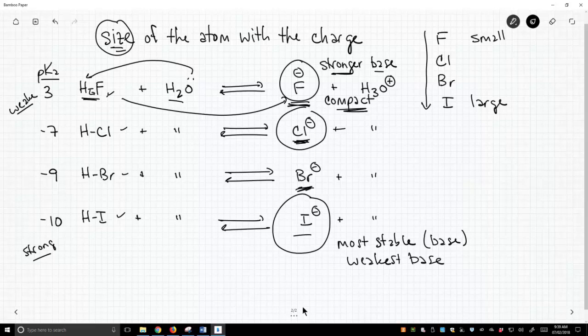Weakest conjugate base means HI is the strongest conjugate acid. So these are size trends that we can identify from the periodic table, and they're very useful in identifying how we talk about charge stability of charged species.